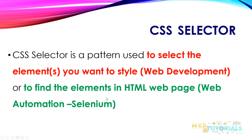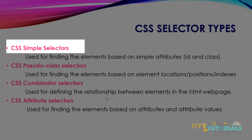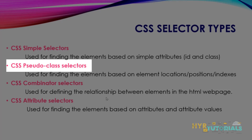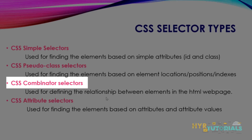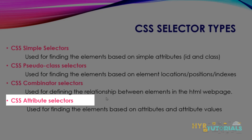How many types of CSS selectors do we have? We have around five types, but only four are covered here because the fifth type is not used in Selenium — it is mostly used by web developers. The four types are: CSS simple selectors, CSS pseudo-class selectors, CSS combinator selectors, and CSS attribute selectors.